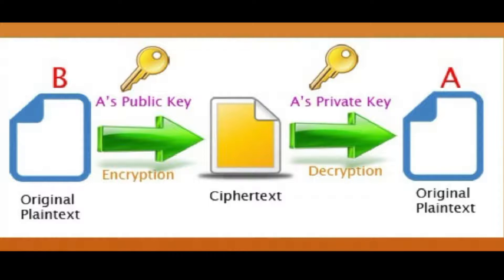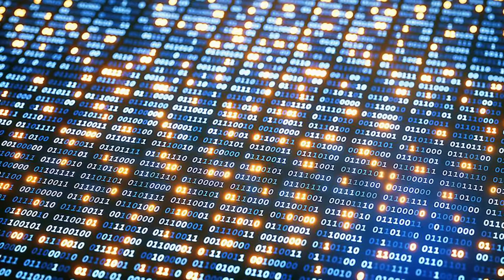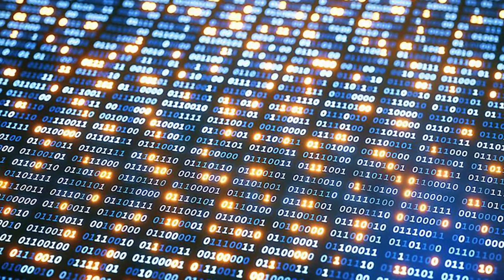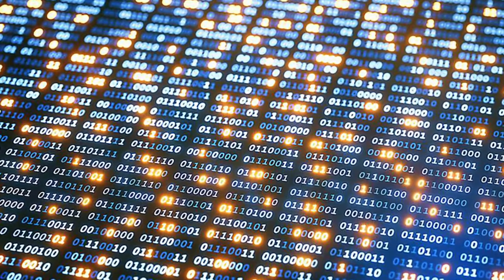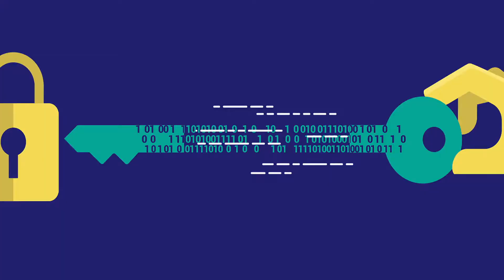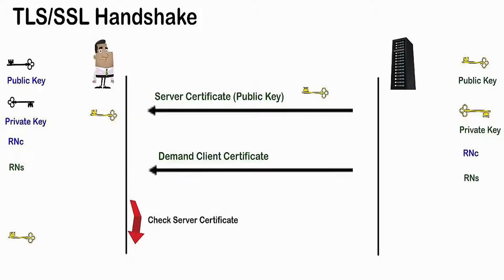To send encrypted data to a recipient, data is first encrypted with that person's public key, and the person receiving the encrypted data decrypts it with the corresponding private key. Public key encryption involves more computation when compared with symmetric key encryption, and so it is not always applicable for encrypting large amounts of data. However, it is possible to use public key encryption to send a symmetric key, which can then be used to encrypt additional data. This approach is used by the SSL protocol.